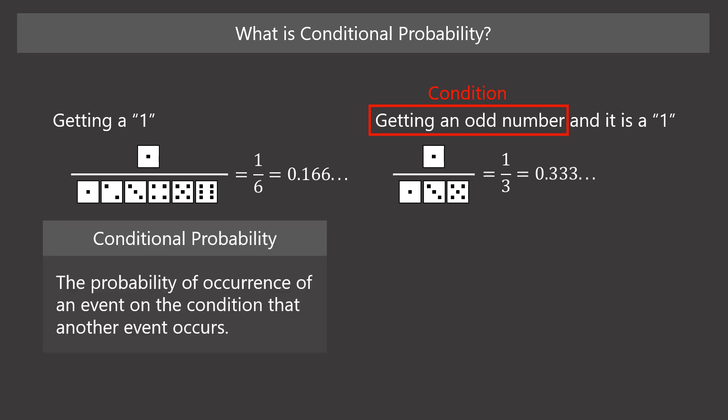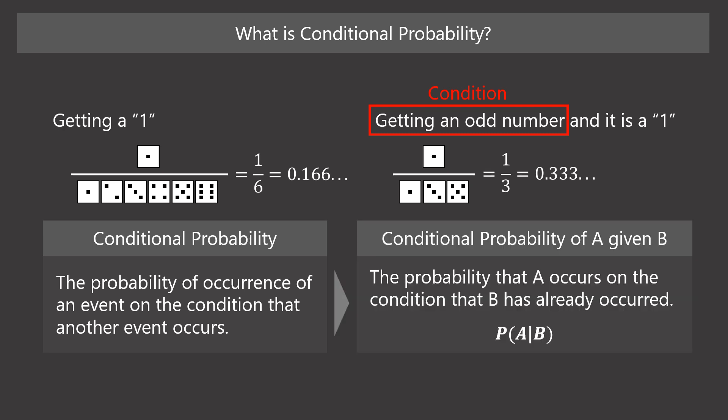In a more general way, conditional probability refers to the probability of occurrence of an event on the condition that another event occurs. More specifically, A given B is the probability that event A occurs on the condition that event B has already occurred. The conditional probability of A given B is denoted as P(A|B).